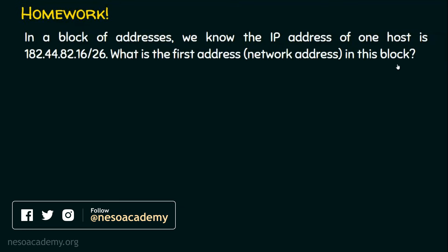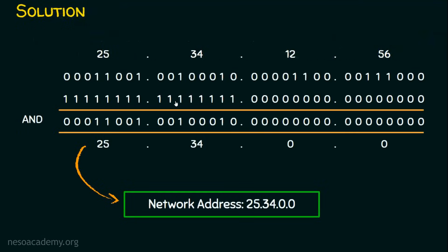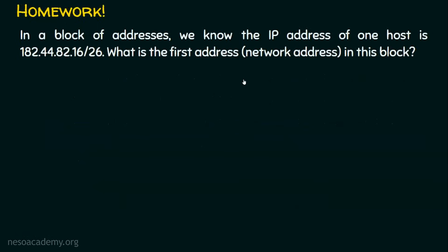Here is a clue: the subnet mask is in slash notation with /26, so we need 26 ones. In the previous example we used 16 ones, but here we need 26. That means 8 ones in the first octet, 8 ones in the second — giving 24 — then bits 25 and 26 in the third octet, leaving 6 zeros at the end. Try this problem and post your answer in the comment section. I hope you enjoyed this lecture — thank you for watching.